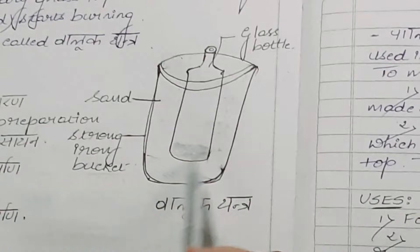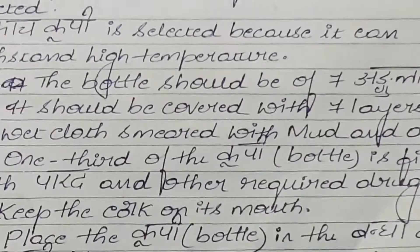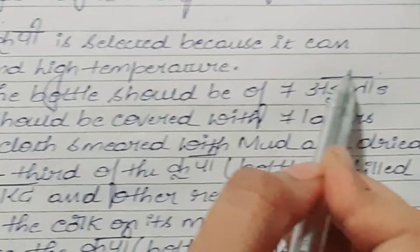You can see in the diagram, a bottle is being selected. The bottle should be of seven angulas. Then it should be covered with the seven layers of wet cloth smeared with mud and dried.